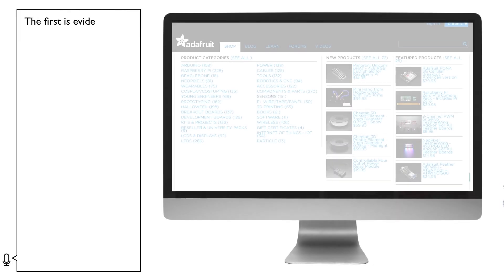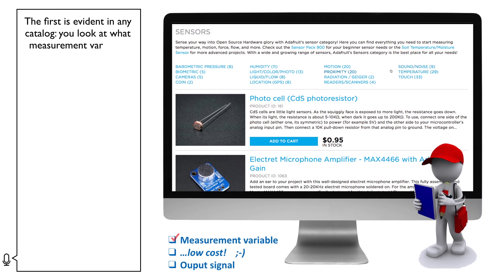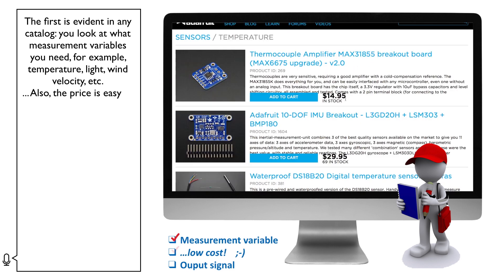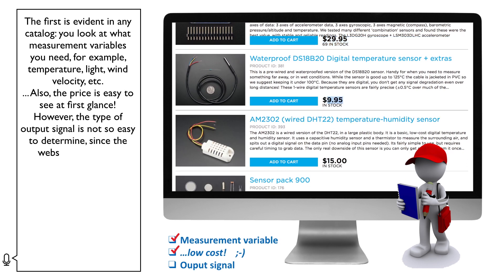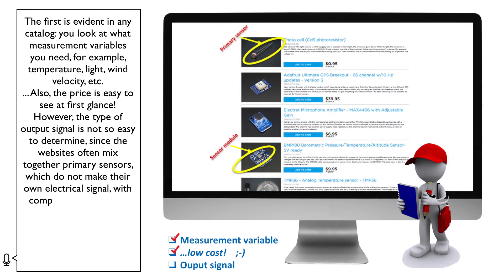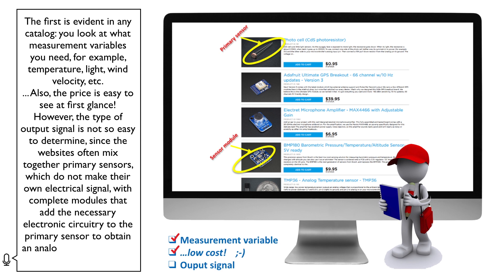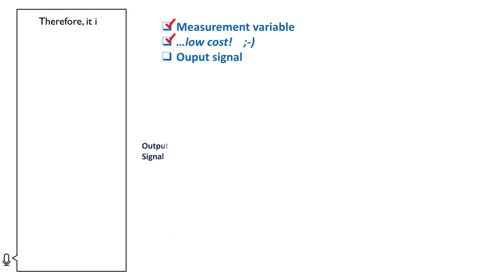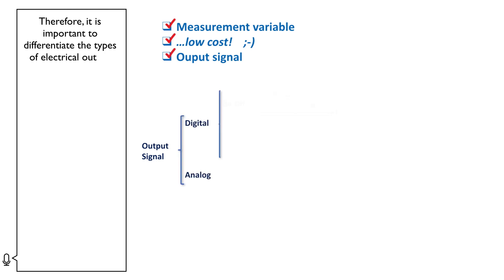The first feature is evident in any catalogue: you look at what measurement variables you need — temperature, light, wind velocity, etc. Also, the price is easy to see at first glance. However, the type of output signal is not so easy to determine, since websites often mix together primary sensors which do not make their own electrical signal with complete modules that add the necessary electronic circuitry to obtain an analogue or digital output signal. It is therefore important to differentiate the types of electrical output signal to which the physical variable is translated.